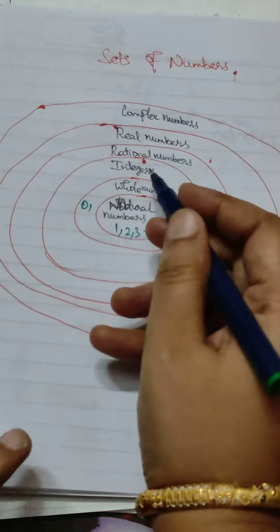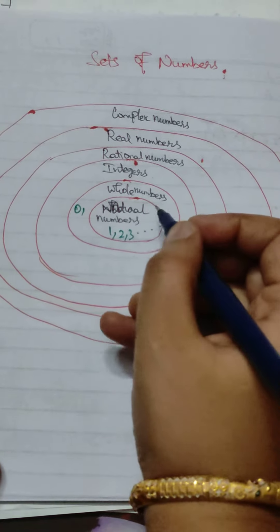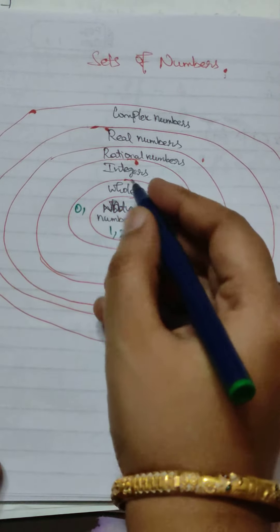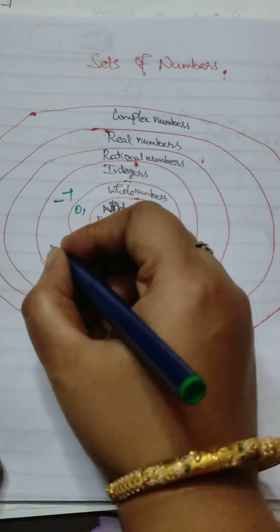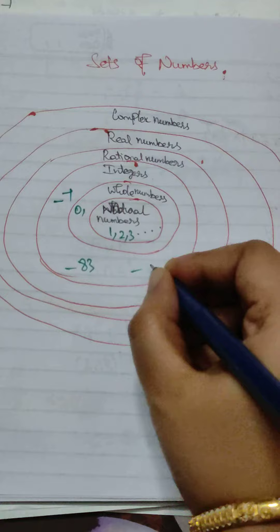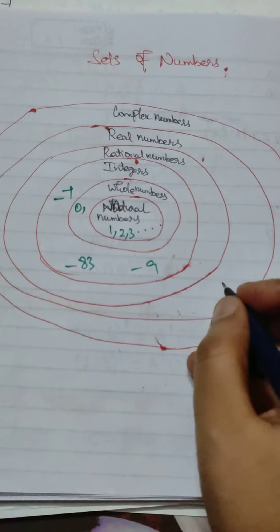Next, what is integer? Integer includes natural numbers and whole numbers, and it also has negative numbers like minus 7, minus 83, minus 9. These are integers.